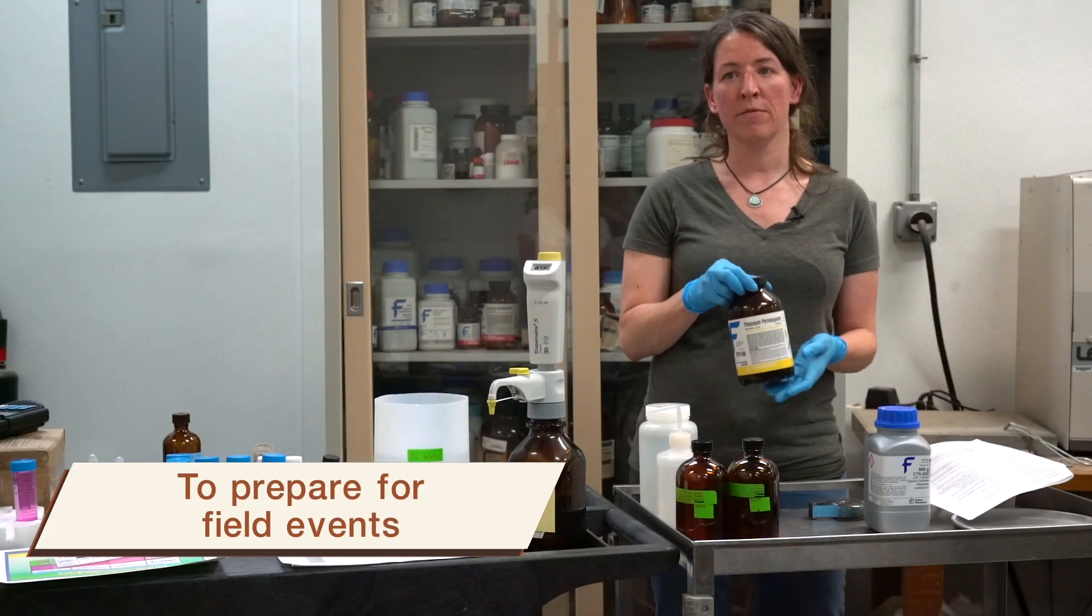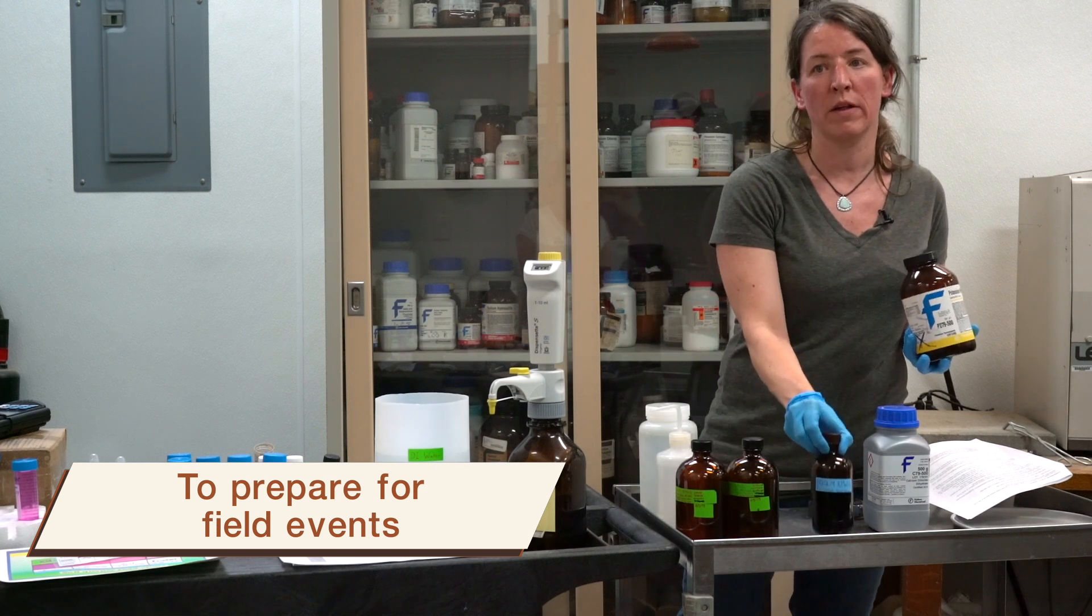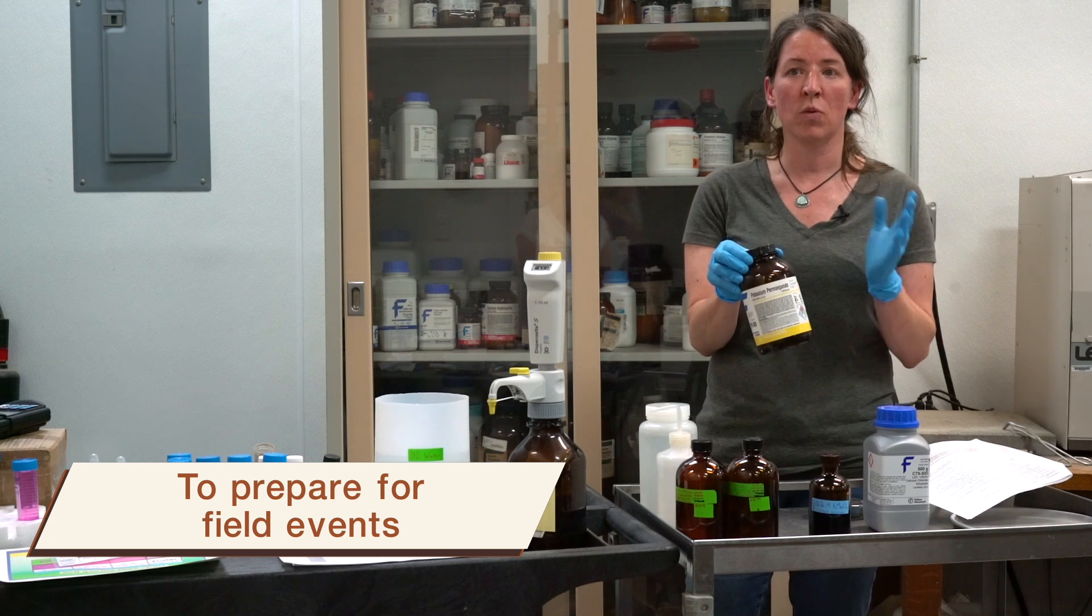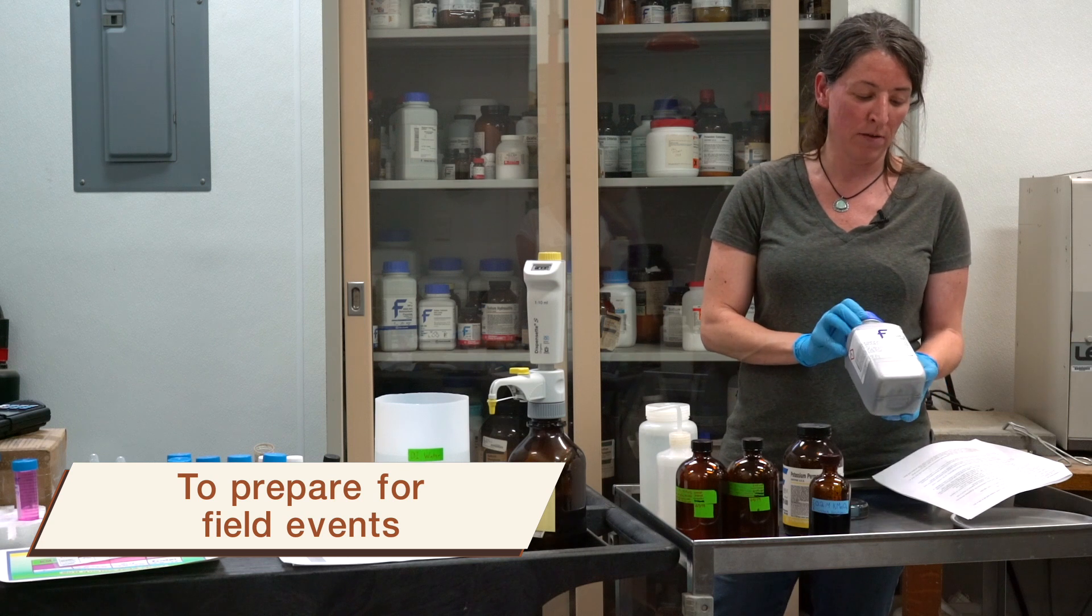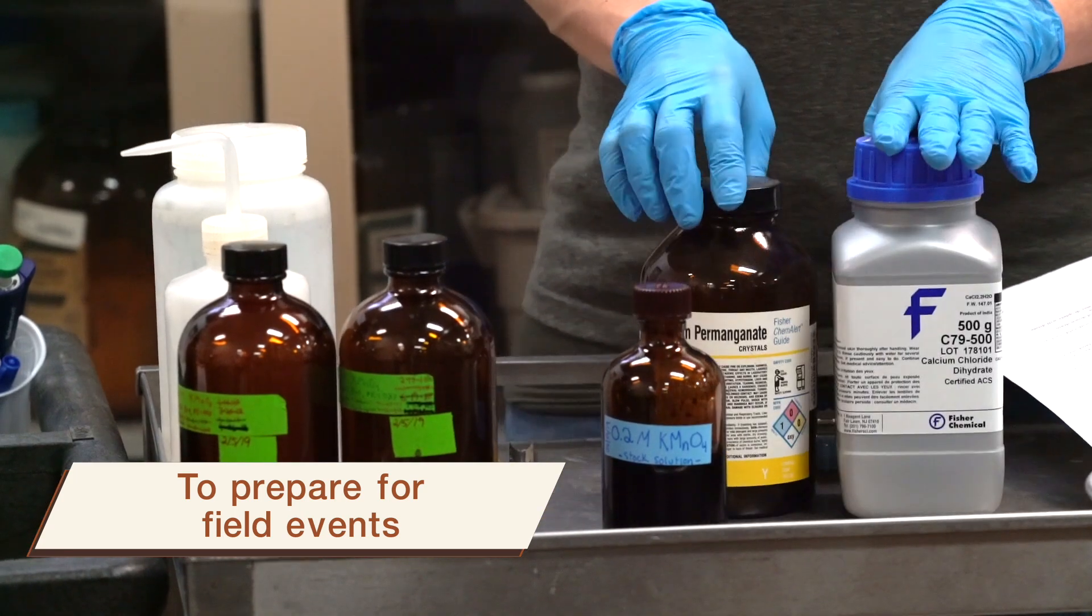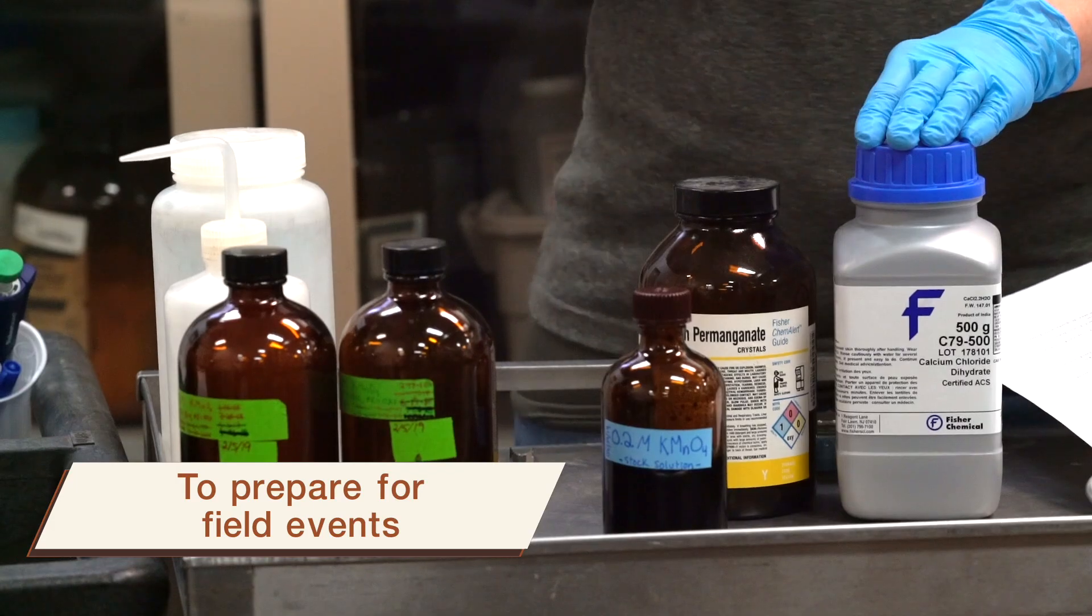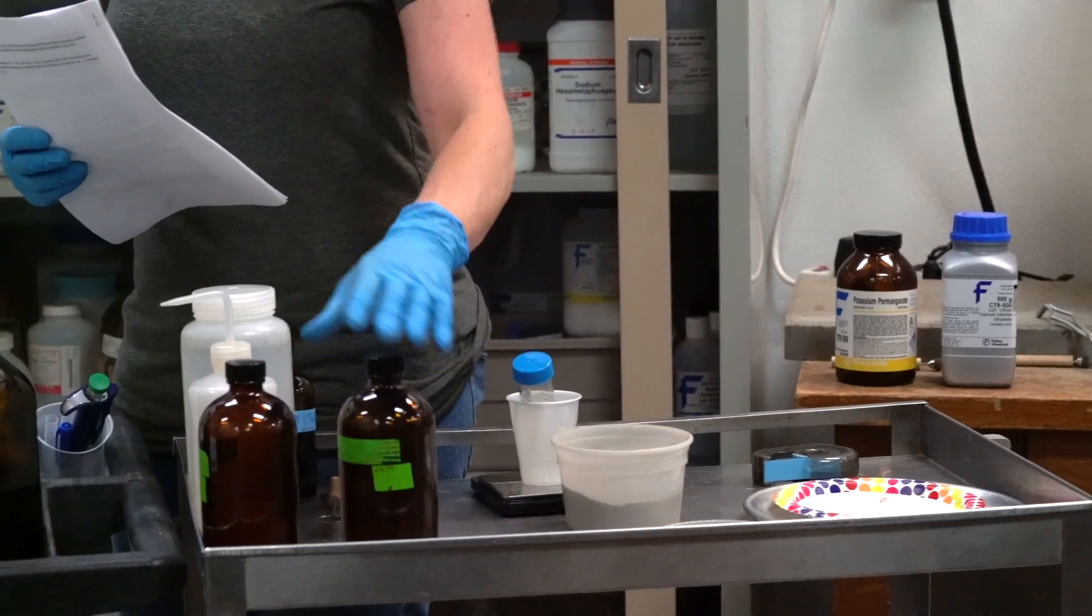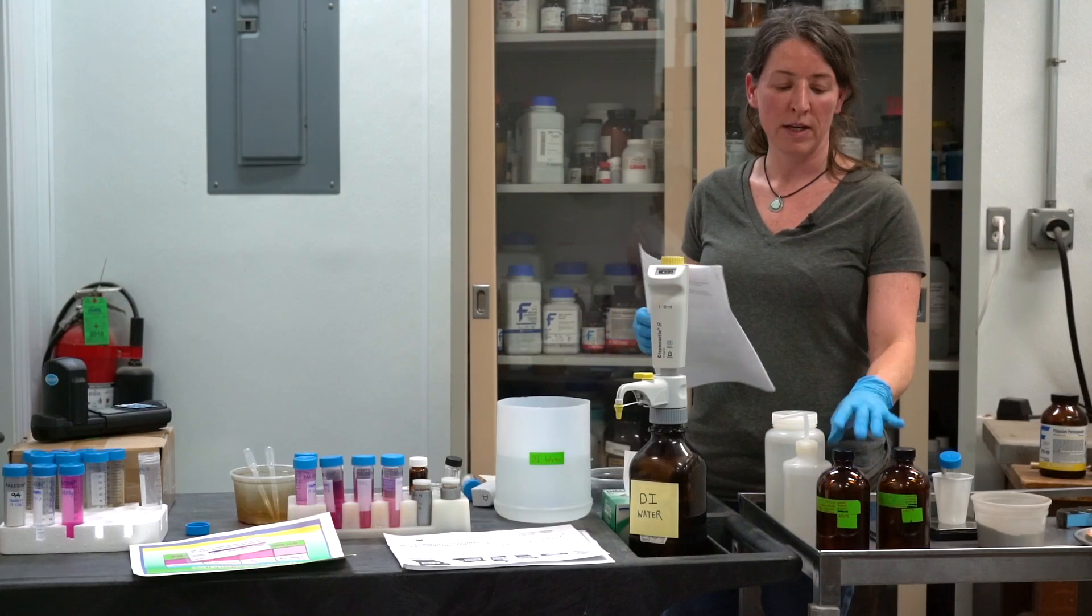To prepare ahead of time for the field event, a day or two before, you're going to want to mix up your 0.2 molar potassium permanganate, we call it the stock solution. You add it in powder form, weigh it out into one liter of deionized water. You're also going to add a specific amount of calcium chloride to that solution. Once you mix up your stock solution, measure the pH, you need to bring it up to 7.2, so add sodium hydroxide drop-wise. The potassium permanganate is very sensitive to light, so store it in a dark colored amber bottle and keep it cool in the refrigerator.